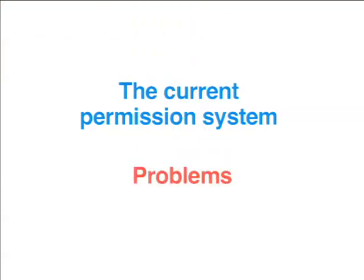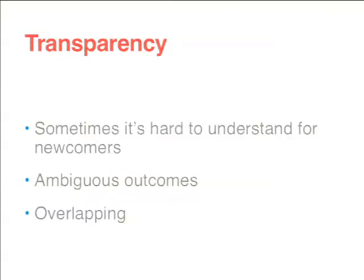The current permission system we have has got some problems. The first is transparency. Sometimes, for Drupal newcomers, it's hard to understand our permission system. And sometimes we don't know the exact meanings of permissions. Of course, we have labels and descriptions, and now we have warnings as well. But are these enough in every case?